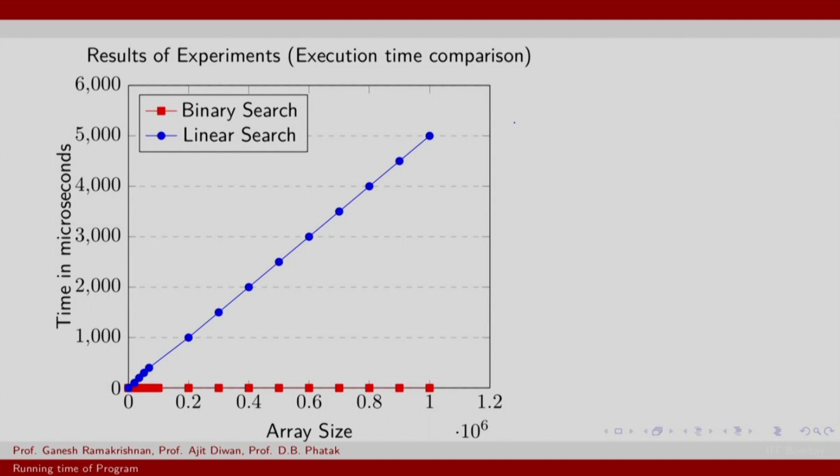We profile the running times of different implementations and plot them one against the other, you could make some observations of the time complexity. We have taken this example of searching over this array. The binary search basically operates on sorted arrays, assumes a sorted array. And as you increase the array size and profile the time required in certain units such as microseconds, as a function of increasing array size, you find that an algorithm such as binary search grows very slowly with the size of the array, whereas linear search as the name says grows linearly.